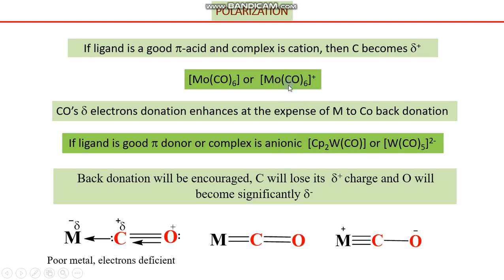For example, consider cyclopentadienyl tungsten carbonyl compared to pentacarbonyl tungsten with a negative charge versus zero charge. The species with negative charge is more electron rich. The cyclopentadienyl (Cp) ligand acts as both a pi donor and sigma donor. In the case of such a pi and sigma donor ligand, the Cp-containing species is more electron rich.